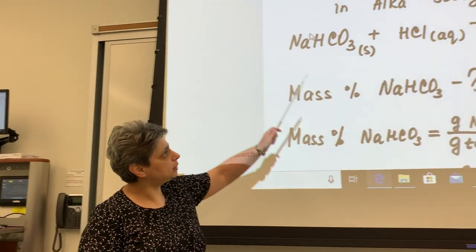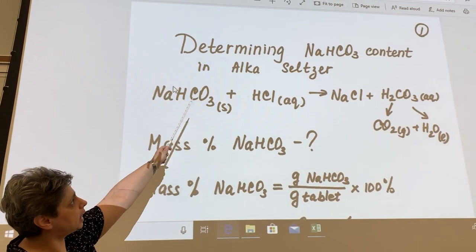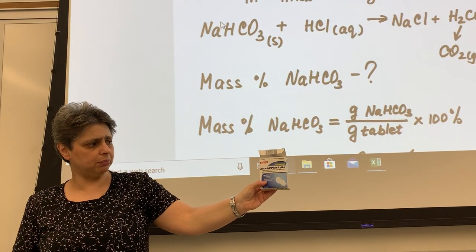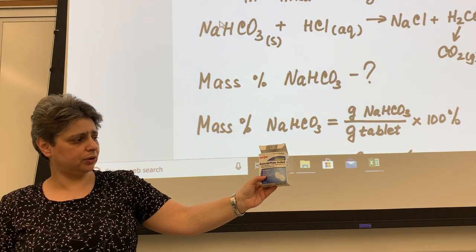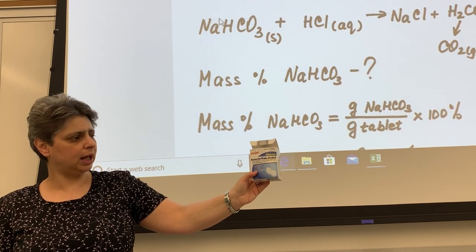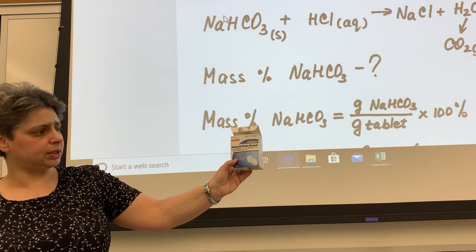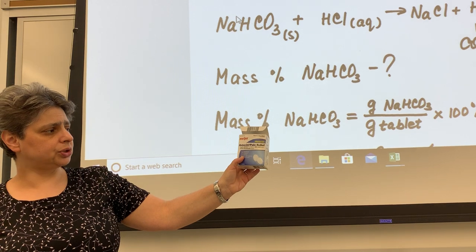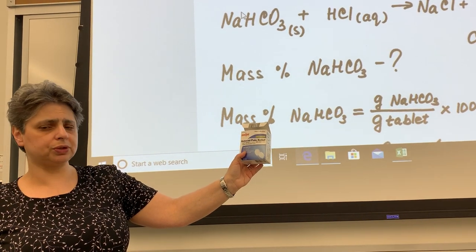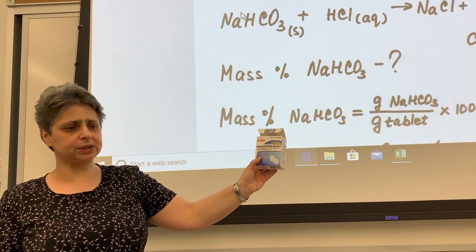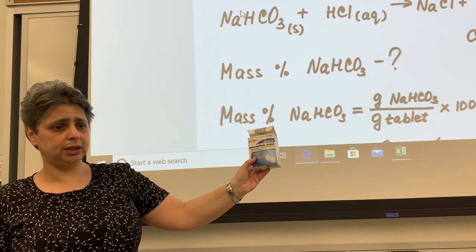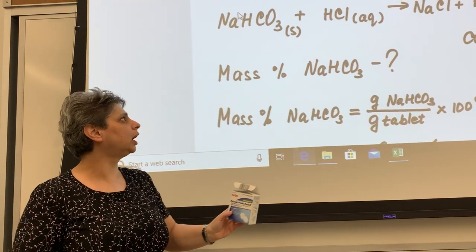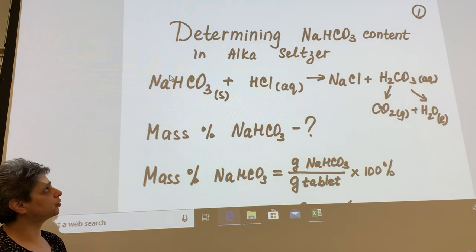The experiment title is Determining Sodium Bicarbonate Content in Alka-Seltzer, and I wanted to show you this. This is actually Meyers' version of antacid pain relief medicine, which is a generic version of Alka-Seltzer. So Alka-Seltzer is an over-the-counter medication that has two active ingredients. One which is responsible for relief of pain is aspirin, and the other one responsible for anti-acid action is sodium bicarbonate, also known as baking soda. The chemical formula for sodium bicarbonate is shown right here.